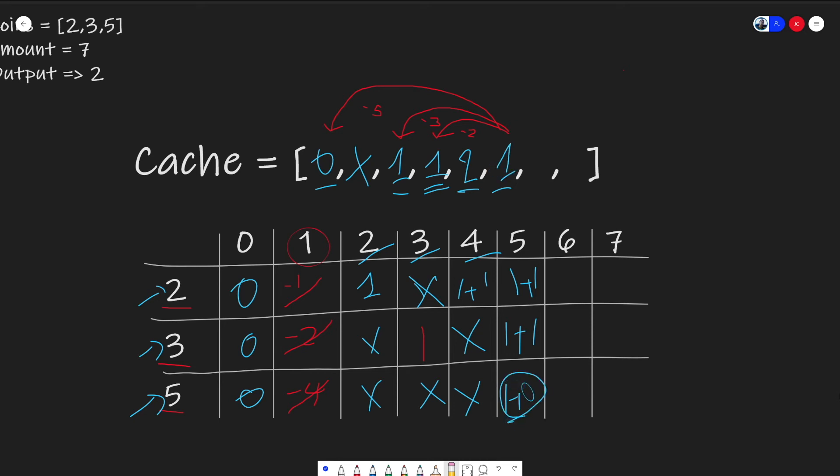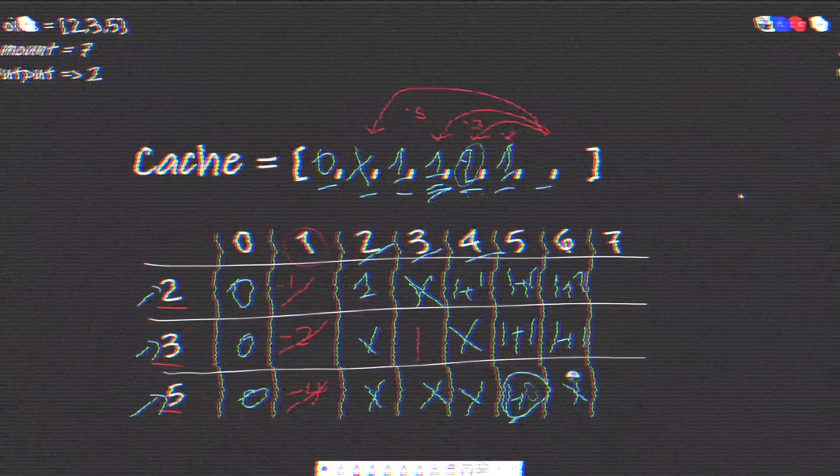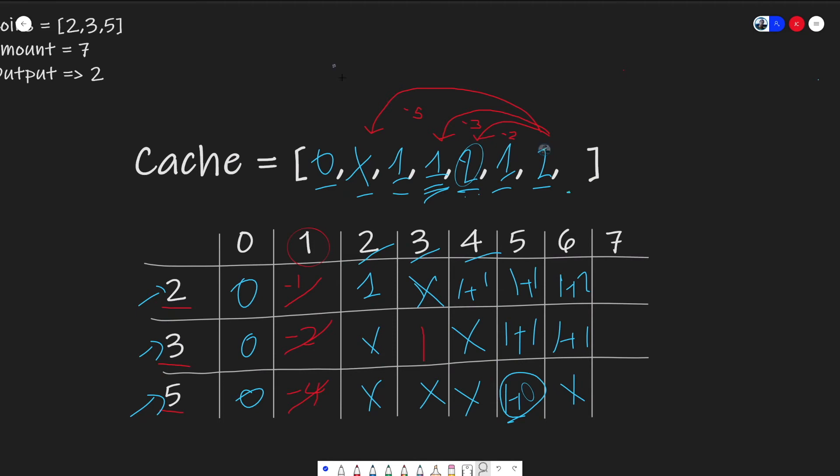Let's look at amount six. Last one at amount seven, we repeat the same pattern again. At negative two that's gonna give us the best answer of one. At negative three that's gonna give us the best answer of two. So one plus two here. At negative five that's gonna give us the best answer of one. So one plus one. So the best answer here is two.